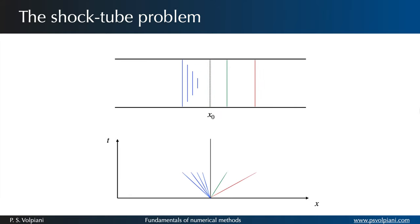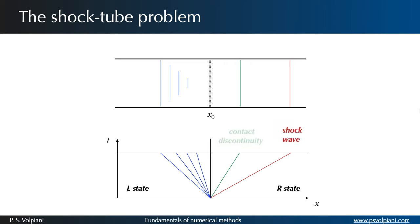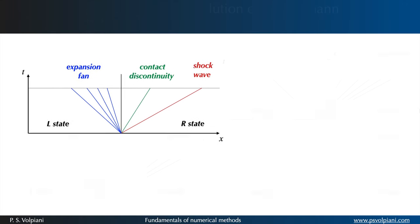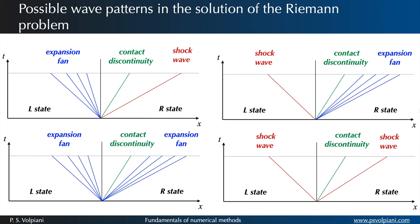We have seen that for a linear system of n hyperbolic partial differential equations, the Riemann problem consists of n waves propagating with speeds given by the eigenvalues. For the 1D Euler equations, the Riemann problem has in general three waves known as shock, contact discontinuity and expansion wave.